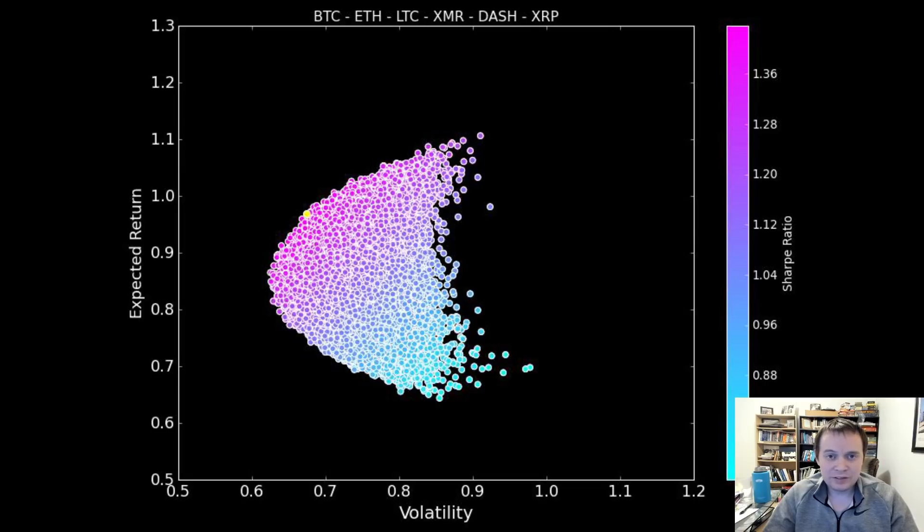The last video we did on modern portfolio theory was coming up with appropriate weights for Bitcoin and Ethereum, and then we added on Litecoin at the end to show how it affected things or how it really didn't affect much of anything.